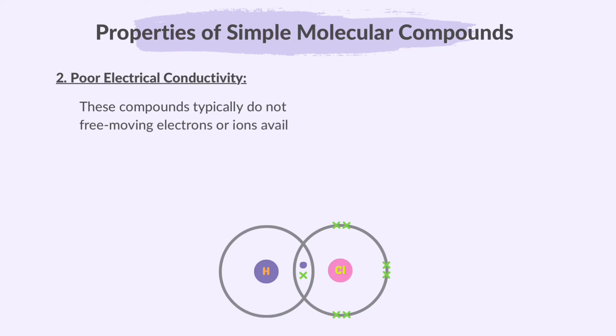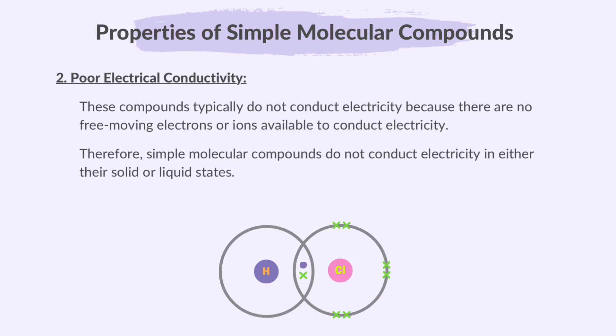These compounds typically do not conduct electricity because their molecules are electrically neutral and there are no free-moving electrons or ions available to conduct electricity. Therefore, simple molecular compounds do not conduct electricity in either their solid or liquid states. They are typically electrical insulators.